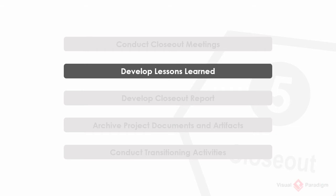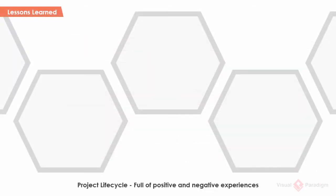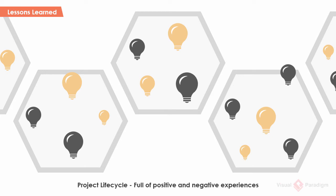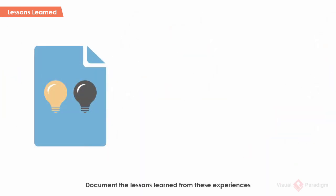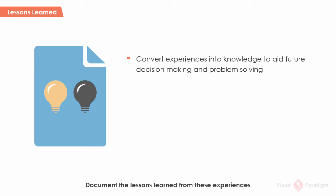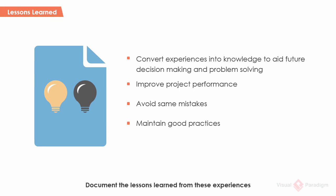Now that you've completed the identification, initiation, planning, and execution and control phases of the IT project management lifecycle, it's time to document the lessons learned based on both positive and negative experiences that result in undesirable outcomes. Lessons learning is a process to convert experiences into knowledge to aid future decision-making and problem-solving. It helps improve project performance, avoid mistakes from happening again, and maintain good practices.